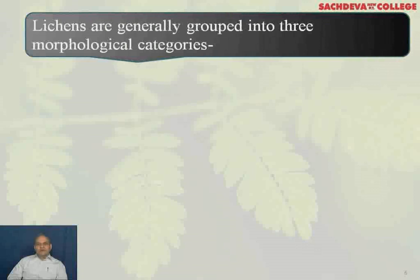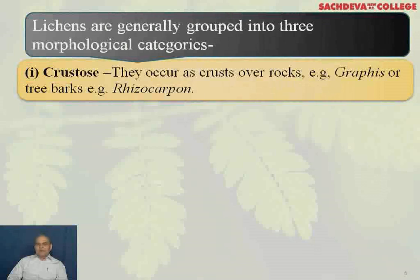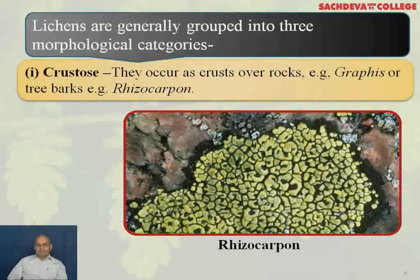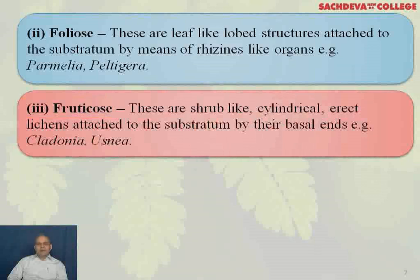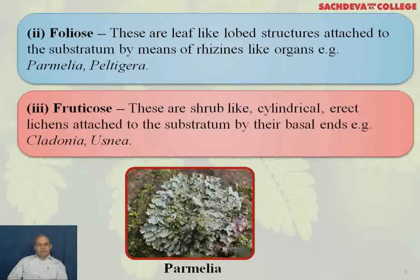Lichens are generally grouped into three morphological categories. Crustose: they occur as a crust over rocks (example: Graphis) or on tree bark (example: Rhizocarpon). Foliose: these are leaf-like lobed structures attached to the substratum by means of rhizines — example is Parmelia and Peltigera. Fruticose: they are shrub-like, cylindrical, erect lichens attached to the substratum by their basal ends — example is Cladonia and Usnea. This is an example of foliose (Parmelia) and this is an example of fruticose (Cladonia).